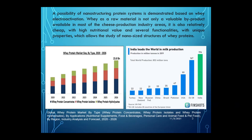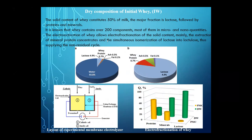Many whey products are obtained in various countries: whey protein concentrate, whey protein isolate, and whey protein hydrolysate. The solid content of whey constitutes about 15% of milk, with the major fraction being lactose, followed by proteins and minerals. Whey contains over 200 components, most of them in micro and nano quantities. Electroactivation of whey allows electrofractionation of solid content, mainly the extraction of protein concentrate, protein mineral concentrate, and simultaneously isomerization of lactose into lactulose, providing a non-residual cycle.